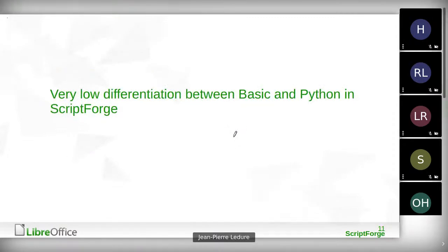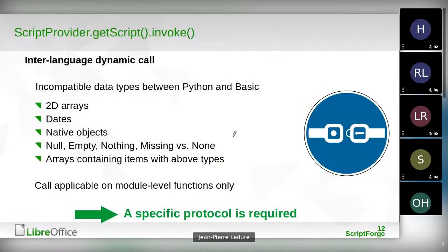The syntax must be identical, but there are also other things to consider when comparing the Basic and Python implementations. We need an identical programming interface so that the user is not aware of executing a Basic or Python script. To call a method from one environment to the other, we use the script provider mechanism and must be able to do that in both directions. There were a number of limitations — not all data types are processed equally.